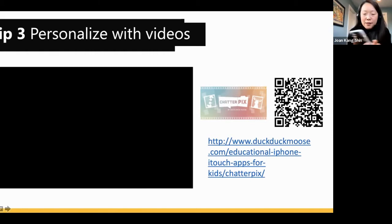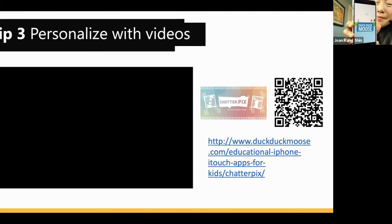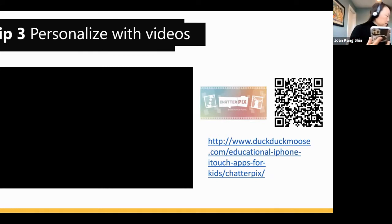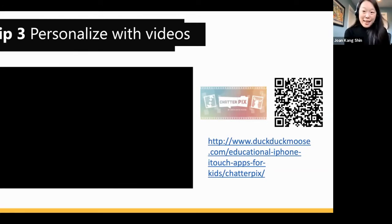Let me show you how to use ChatterPix. You open the app, take a photo or use an existing one, draw a mouth on whatever you've photographed, then press record and speak. The mouth will animate while your audio plays. I'll take a photo of this frog, draw a mouth on it, record a message, and it'll play back as the frog talking.